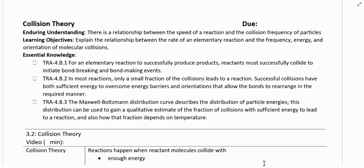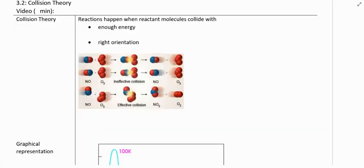Two, in most reactions, only a small fraction of collisions lead to a reaction. Successful collisions have to have both enough energy and the right orientation. Collision theory tells us that reactions happen when molecules collide with enough energy and the right orientation.